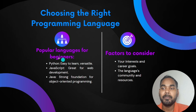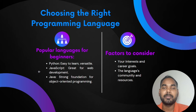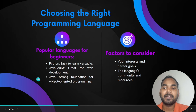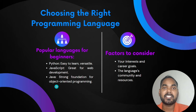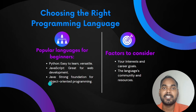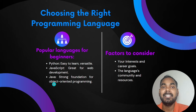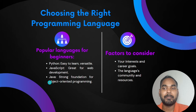Whether it is any company, most companies — around 80 to 90% of companies — work on these three languages: Python, JavaScript, and Java. Java alone is used by 80% of companies, and over 2 billion devices use Java as a programming language, making it one of the most widely used languages globally.